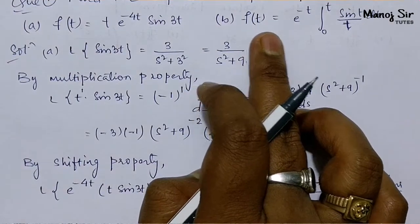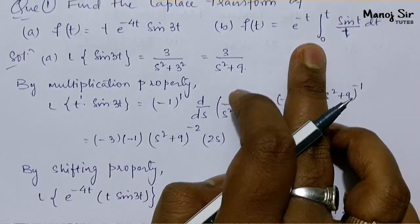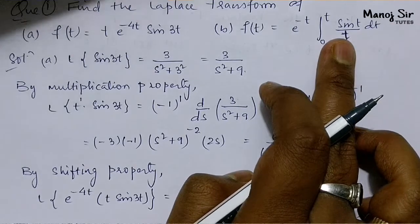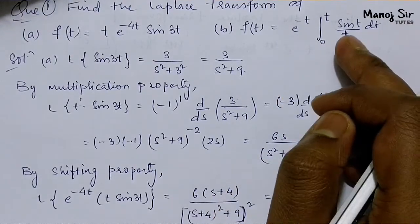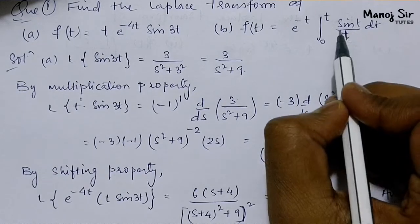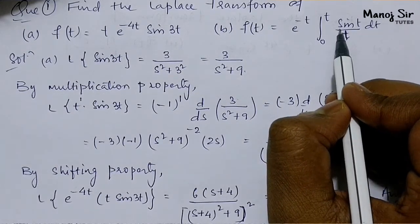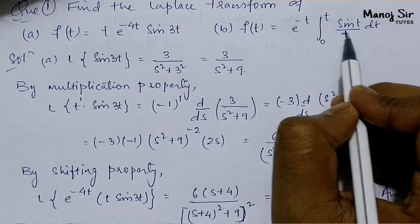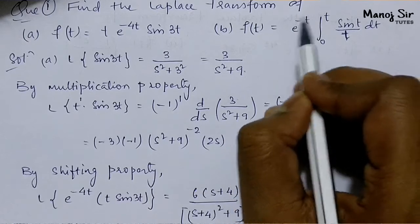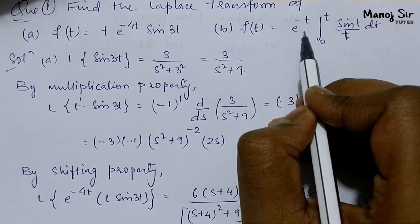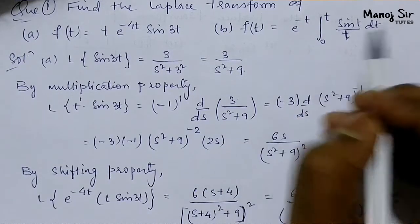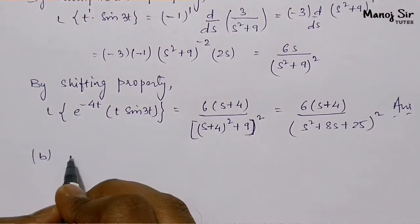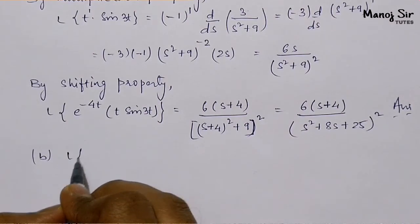Now for the second part: f(t) = e^{-t}·∫₀ᵗ (sin t / t) dt. The approach will be: first find L{sin t}, then apply the division property, then the integral property, and finally the shifting property.